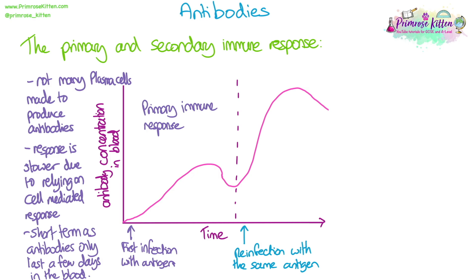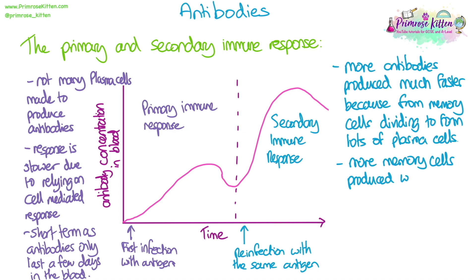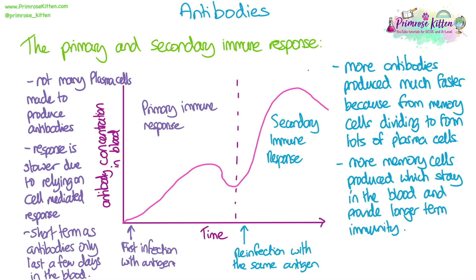Just before the second peak, you're reinfected with the same antigen, triggering the secondary immune response. You get a much steeper, faster increase in antibody concentration and a much slower drop-off. This is because memory B cells rapidly divide, forming plasma cells that produce lots of antibodies. More memory cells are also produced, staying in the blood longer and continuing to produce antibodies by dividing into plasma cells again, meaning immunity is longer-term.